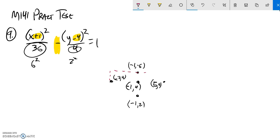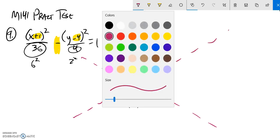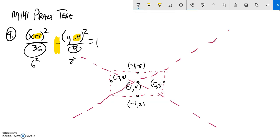My asymptotes go corner to corner. I also notice that it's x squared minus y squared, so it's going to go this way and this way.